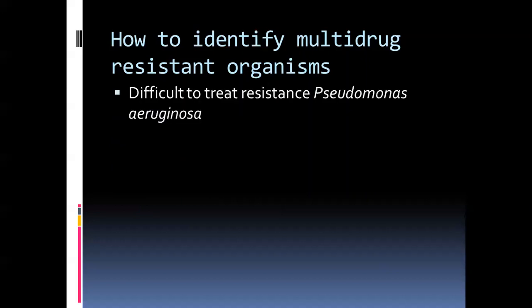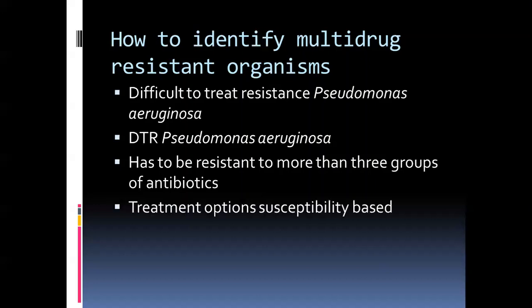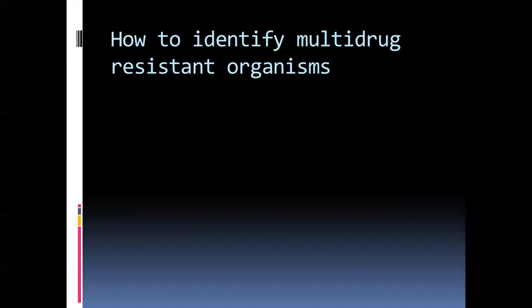The next family uses a newer term: difficult-to-treat resistance Pseudomonas aeruginosa, or DTR Pseudomonas aeruginosa, mentioned in recent IDSA guidelines. A DTR or multi-drug resistant Pseudomonas aeruginosa must be resistant to more than three groups of antibiotics — unlike CRE, MRSA, or VRE which had only one antibiotic to look for. You have to assess the families of antibiotics and whether the organism is resistant to three or more before calling it MDR, after which infection control and treatment options are pursued. Treatment is usually susceptibility-based, but the most common option is again colistin.